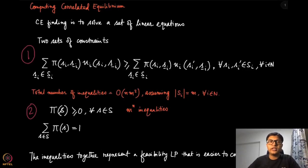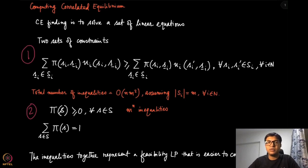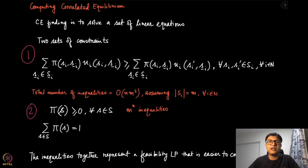Apart from the fact that correlated equilibrium models certain real-world situations much better than mixed strategy Nash equilibrium — as discussed in the case of two friends watching a football or soccer game, or in the case of the traffic signal game — correlated equilibrium also has another advantage: its computational tractability. Mixed strategy Nash equilibrium is difficult to solve; it is a computationally hard problem, but that does not apply to correlated equilibrium.